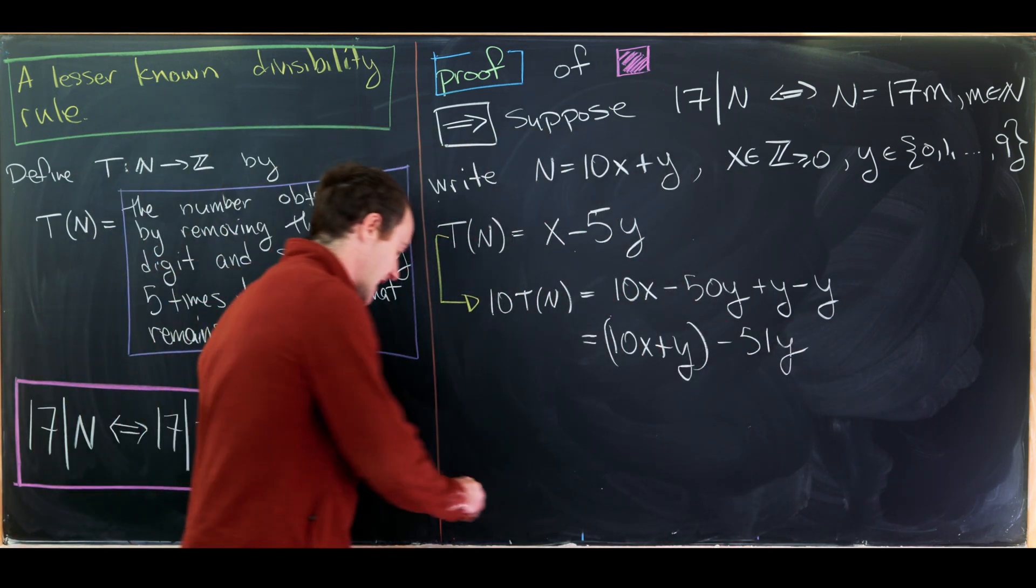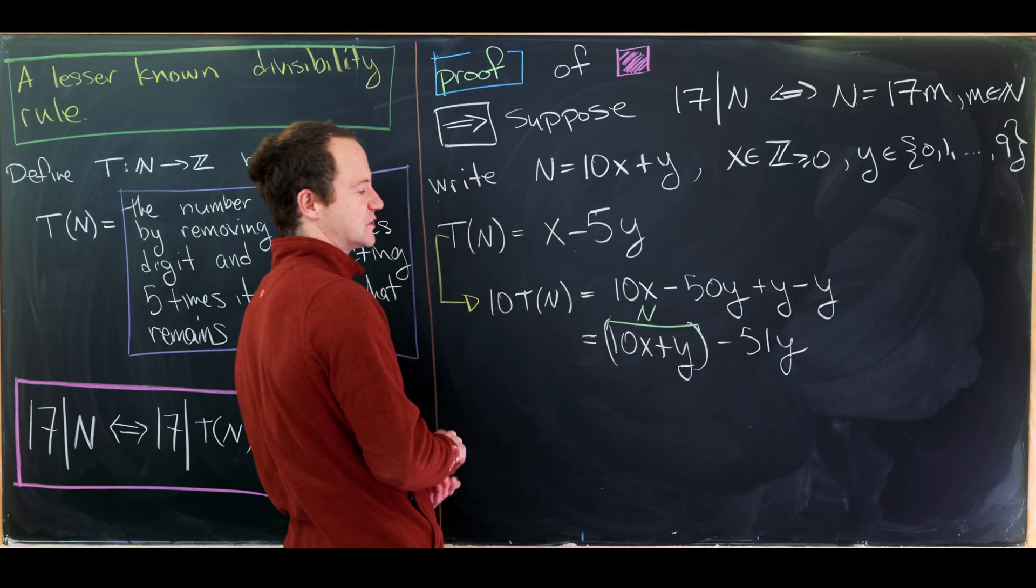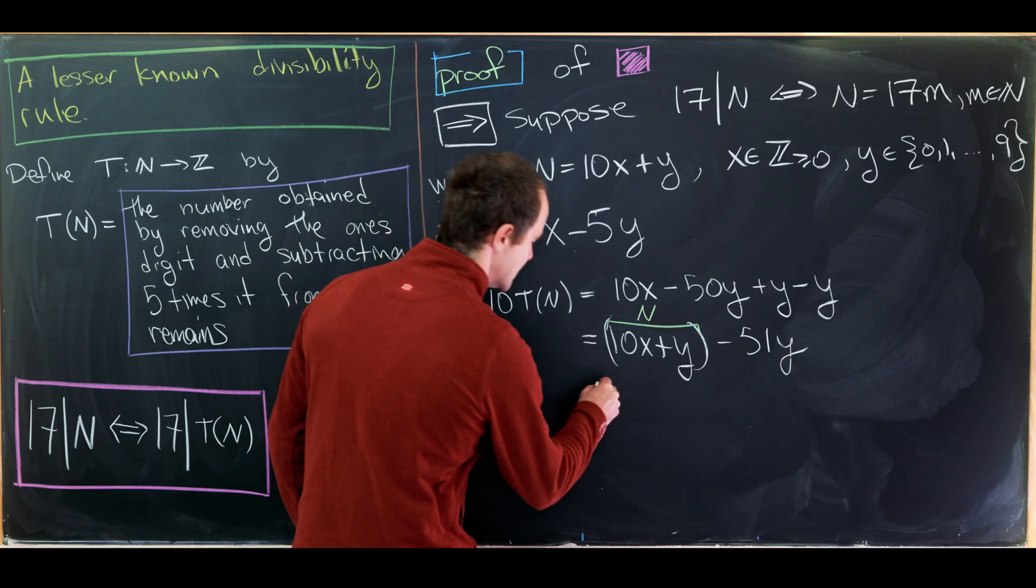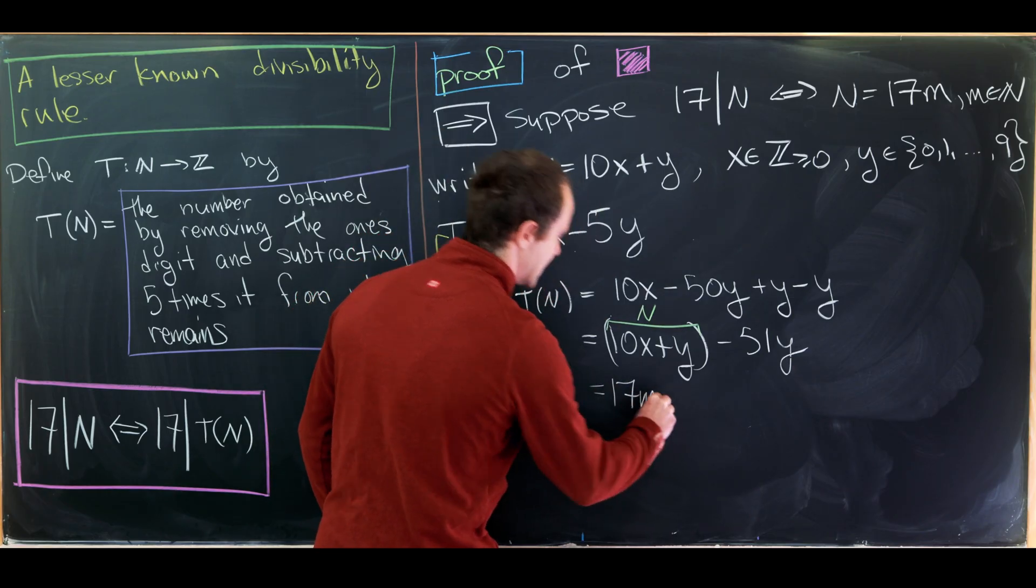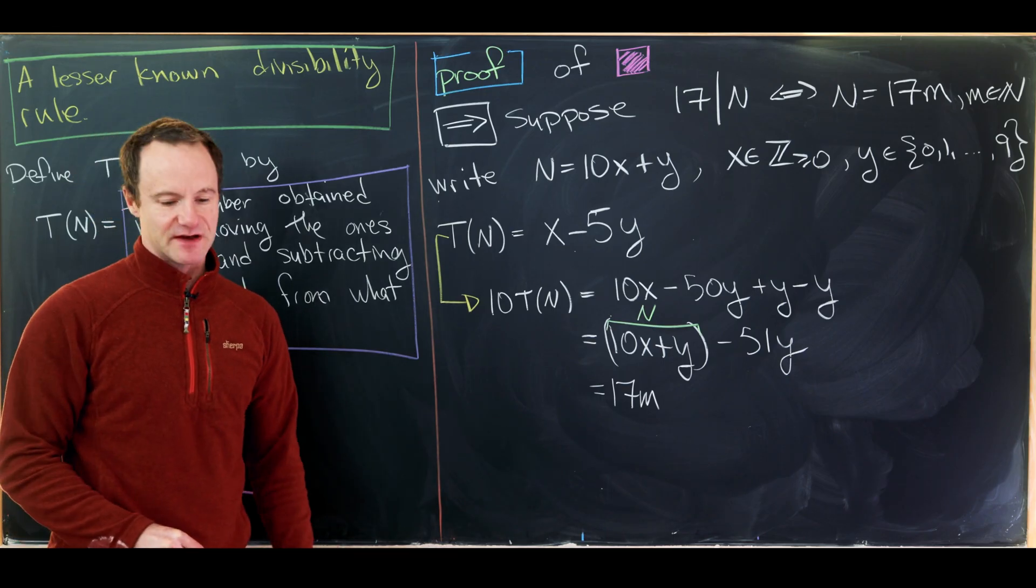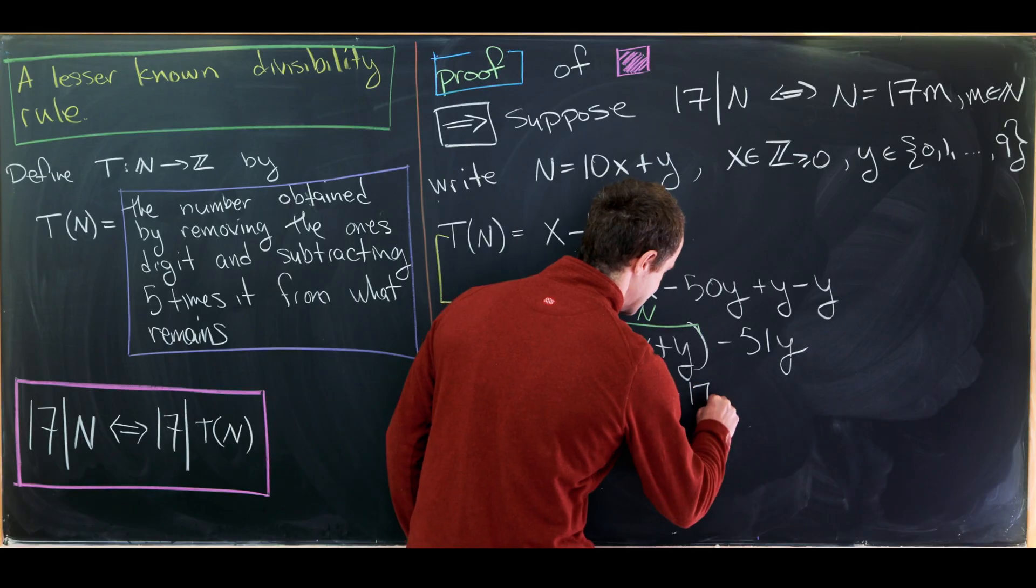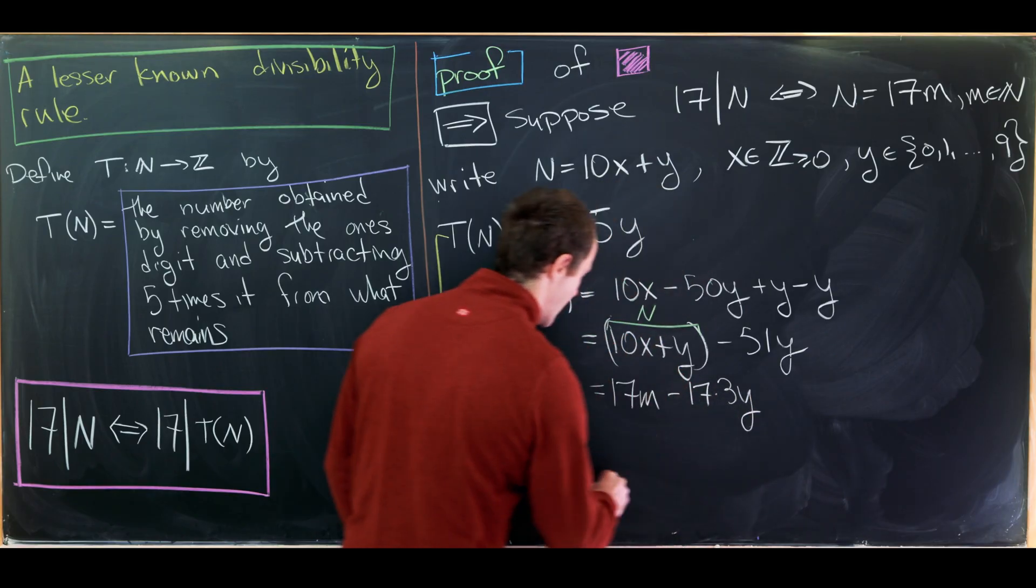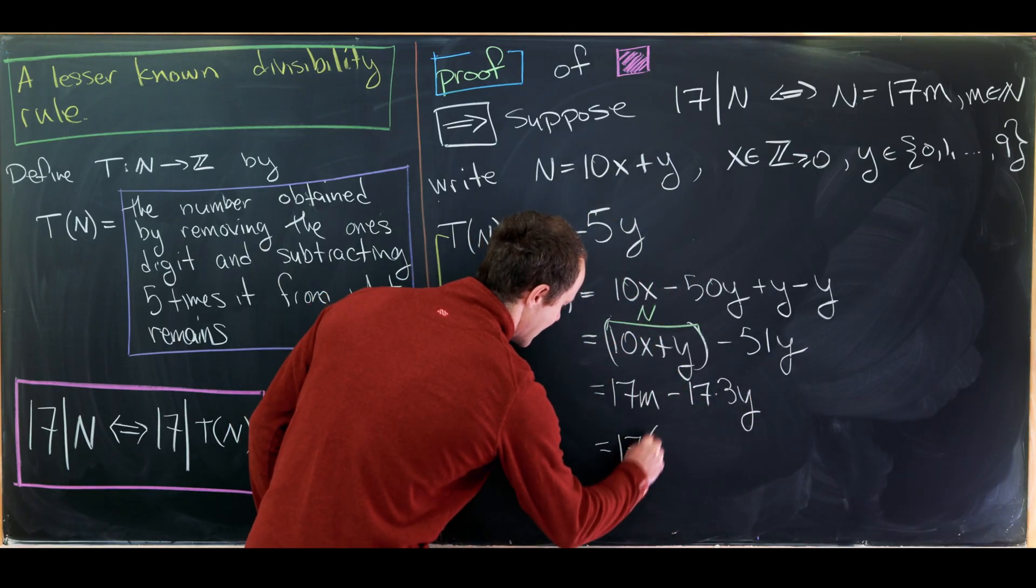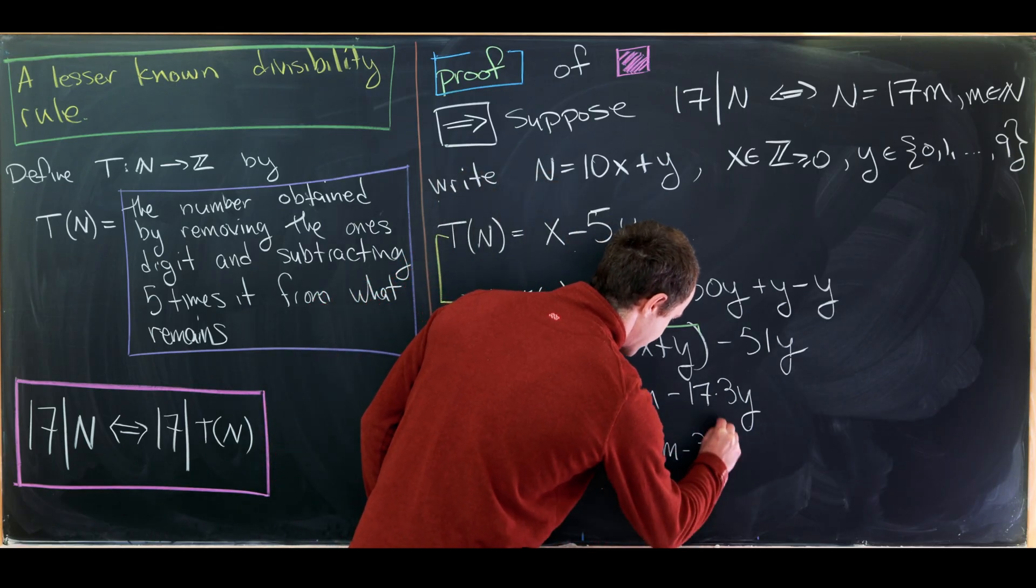But let's notice that 10x plus y is exactly our starting number, which we called capital N. So that's equal to 17 times m. And then 51 is itself a multiple of 17. It's 17 times 3. So this is minus 17 times 3y. So we can clearly factor 17 out of this whole thing. And we have m minus 3y.